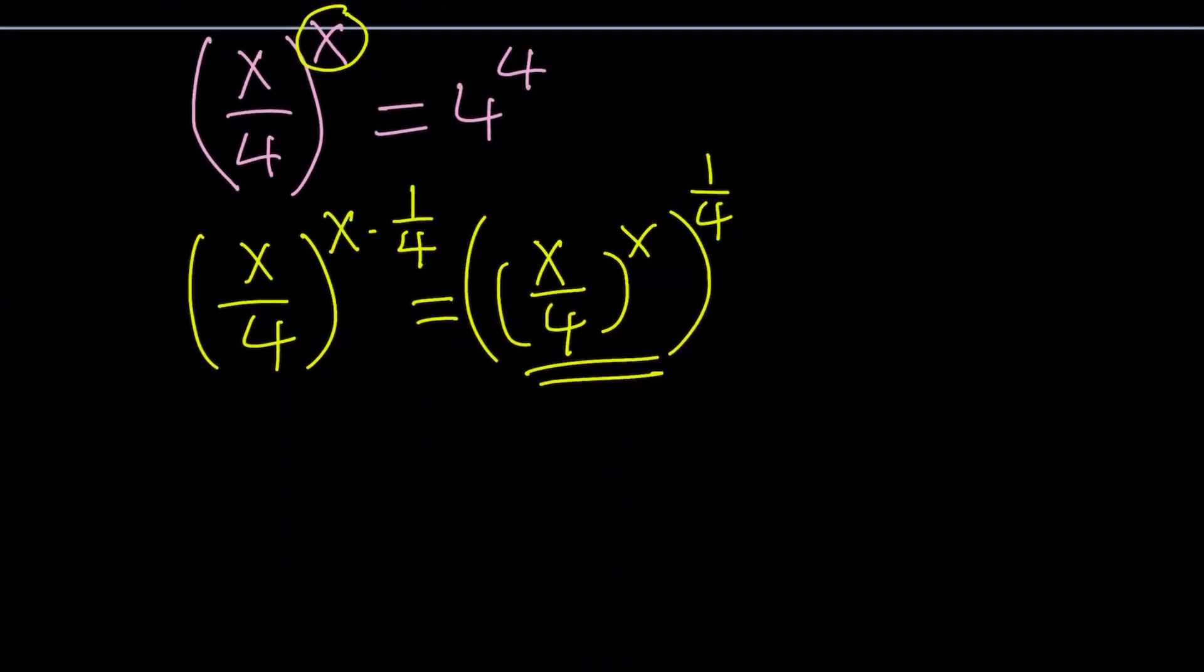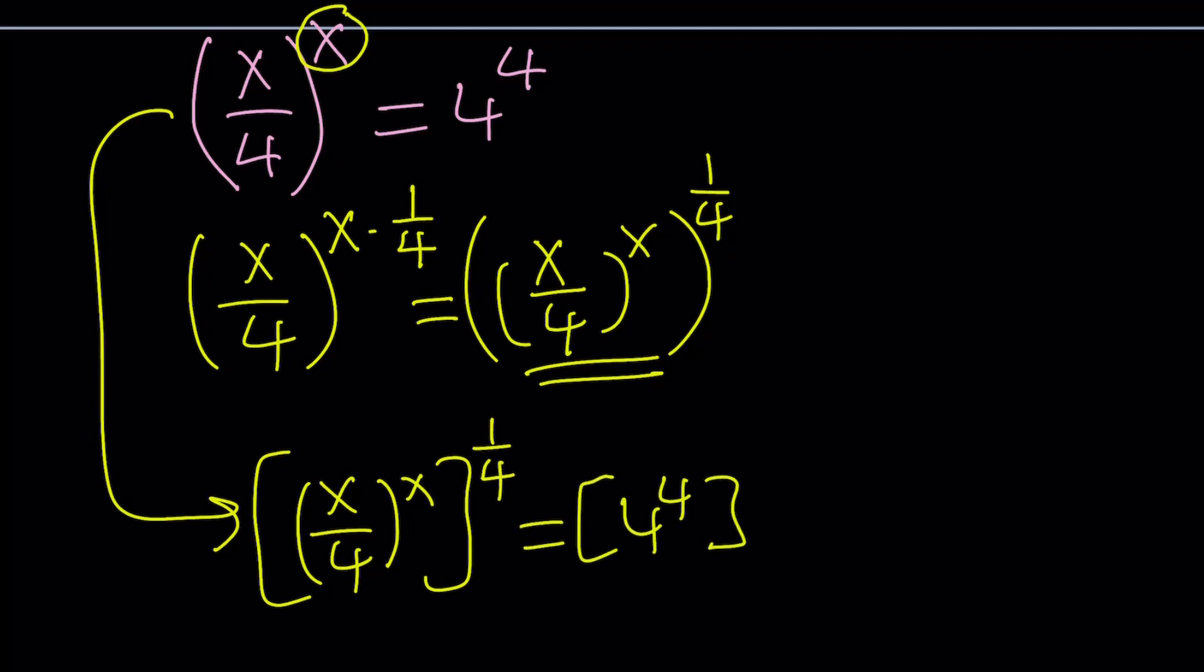So that's what we have to do on both sides. And let's do it. So x over 4 to the power x to the power 1 fourth equals 4 to the power 4 to the power 1 fourth. And it's okay to do, as long as the quantities are positive. If I have a negative quantity, which I don't, then I'll have a problem with the fourth root, but x must be positive.